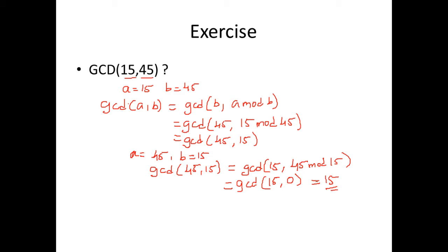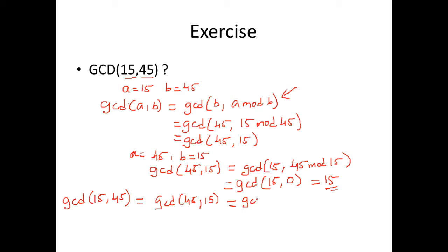So 15 is the greatest common divisor for 15 and 45. We achieved this by using the concept repeatedly. We first found GCD of 15, 45, which was equivalent to GCD of 45, 15, and finally that led us to GCD of 15, 0, and we arrived at 15. So GCD of 15 and 45 is 15.